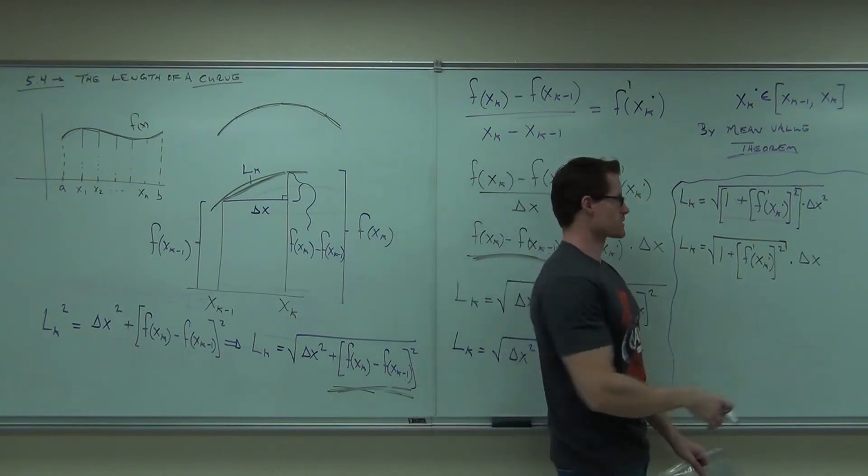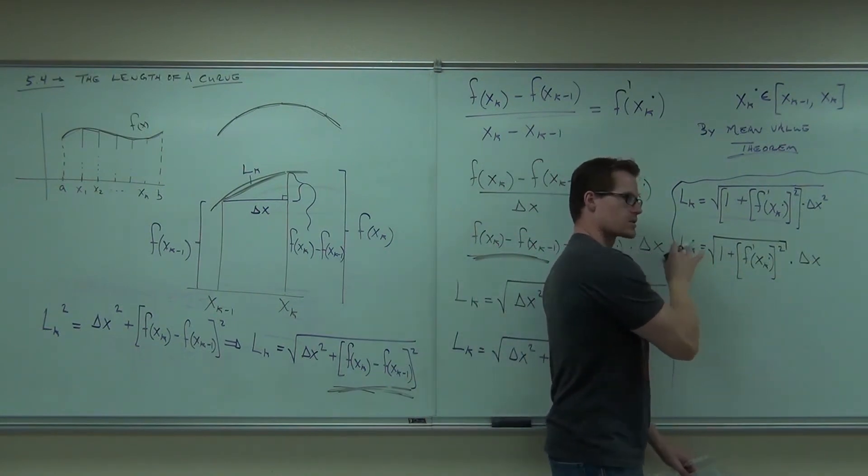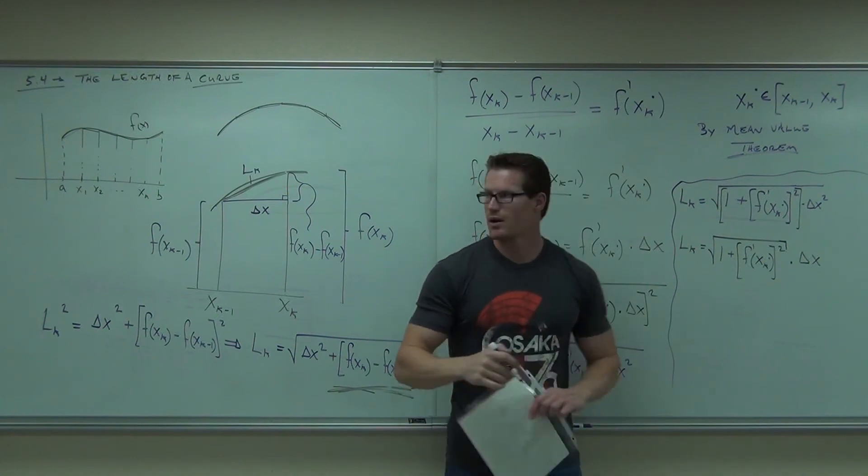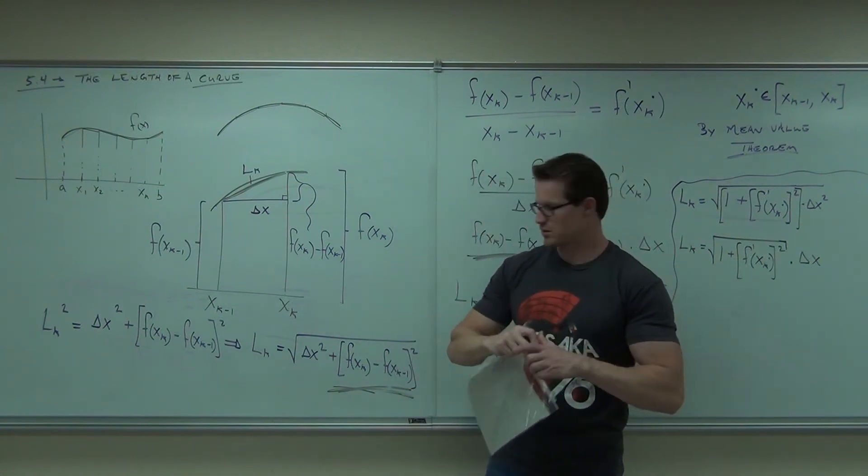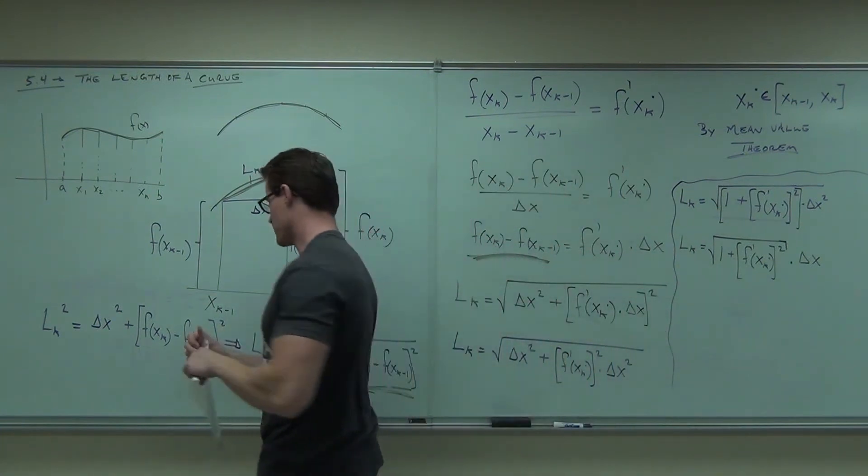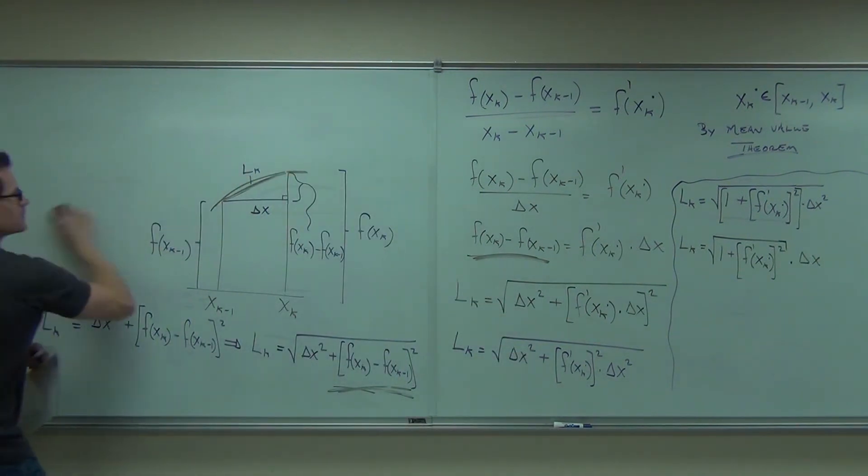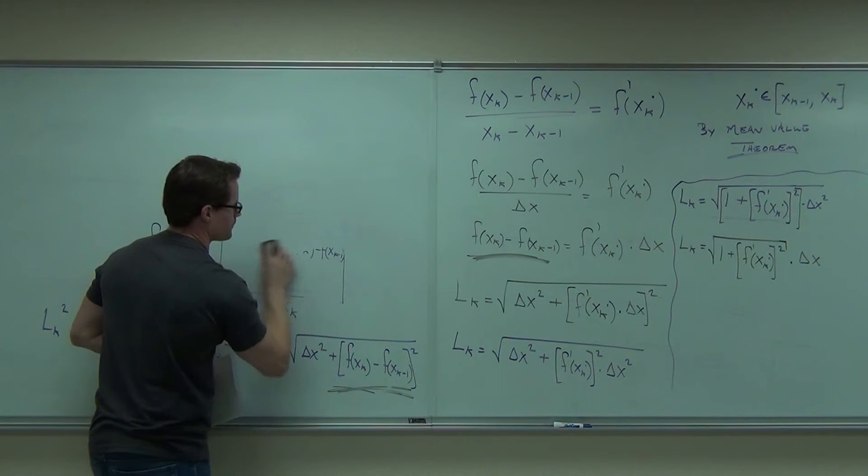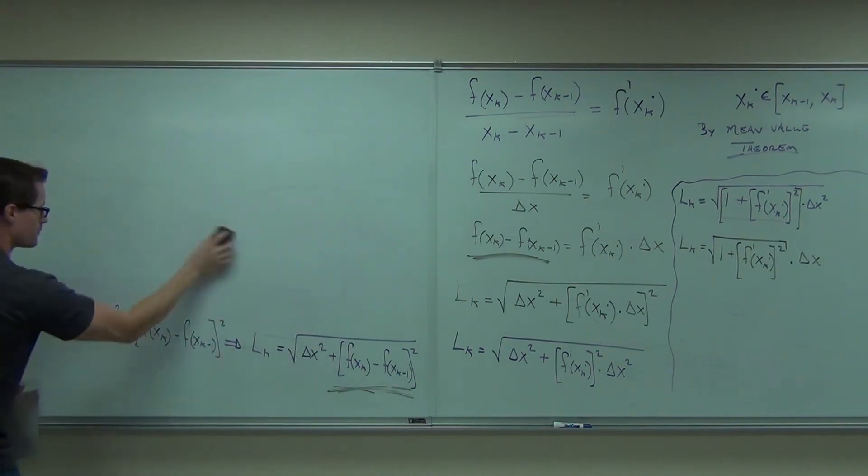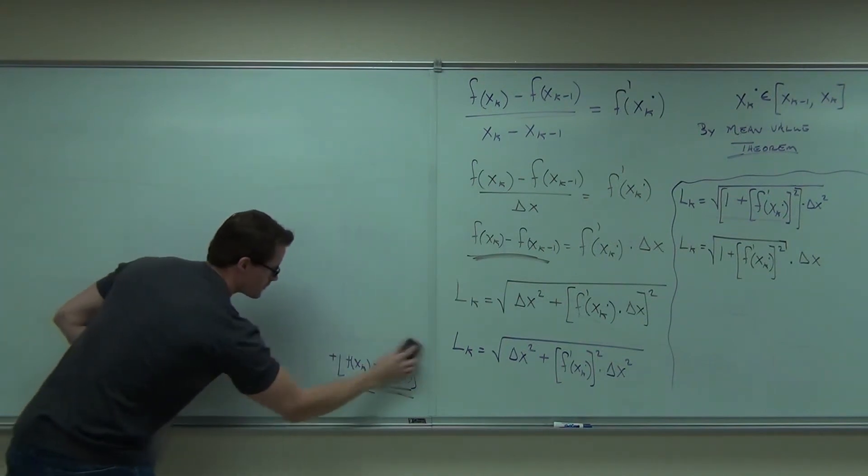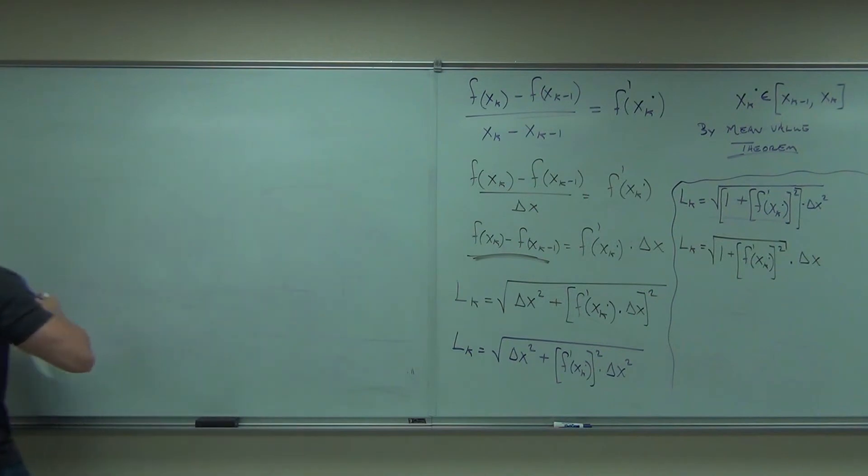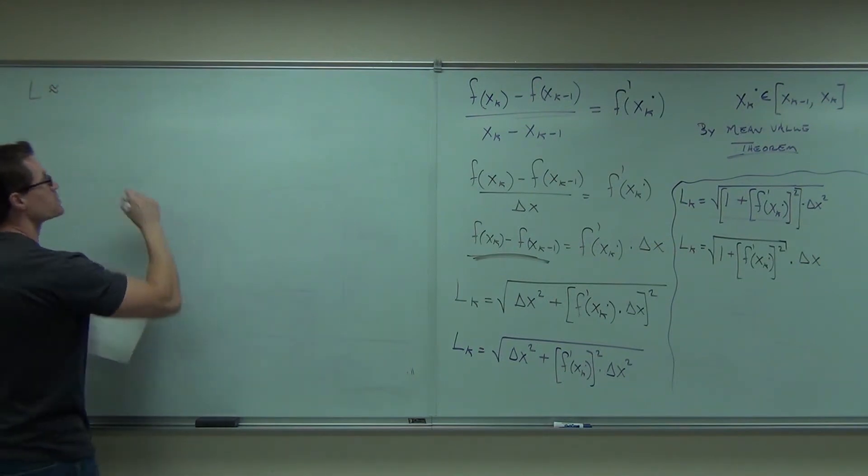That's the length. That's the length for one single section. Tell me how I find multiple sections. A summation would help me find multiple sections. Very good. So that's for one. So here's for all of them, but it's an approximation.